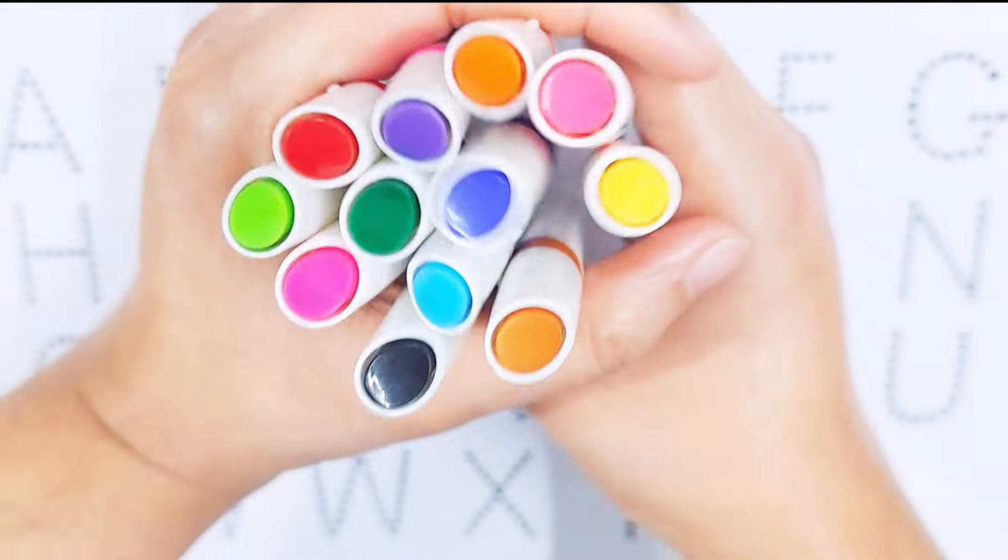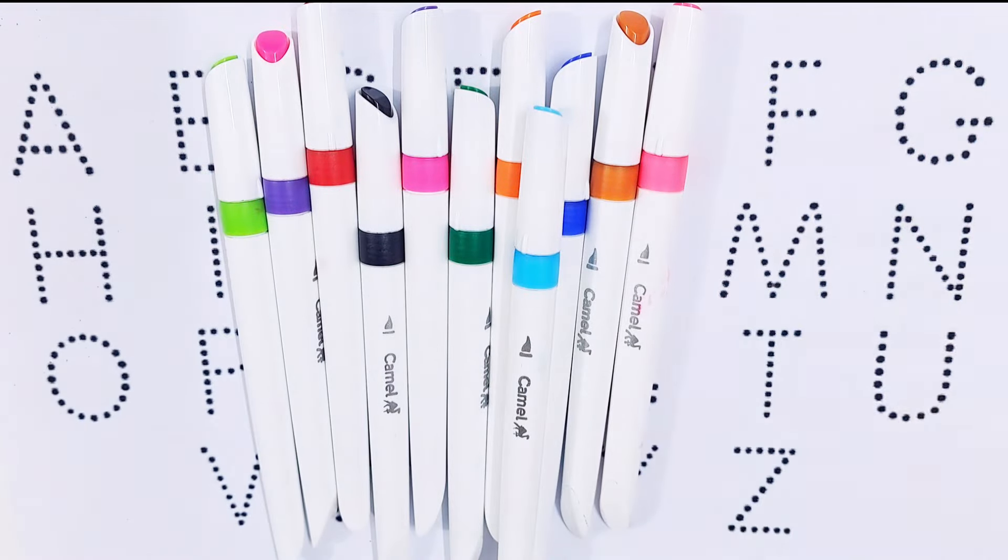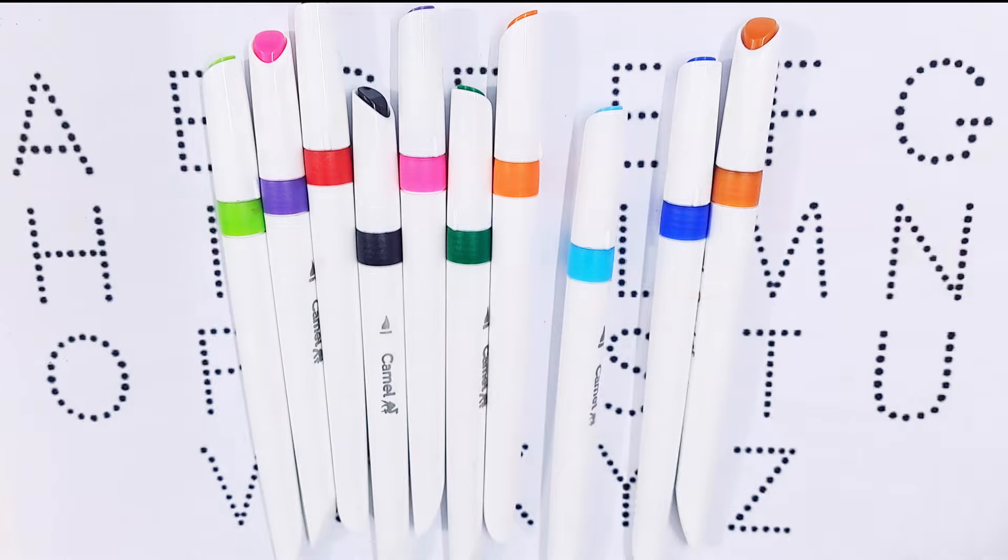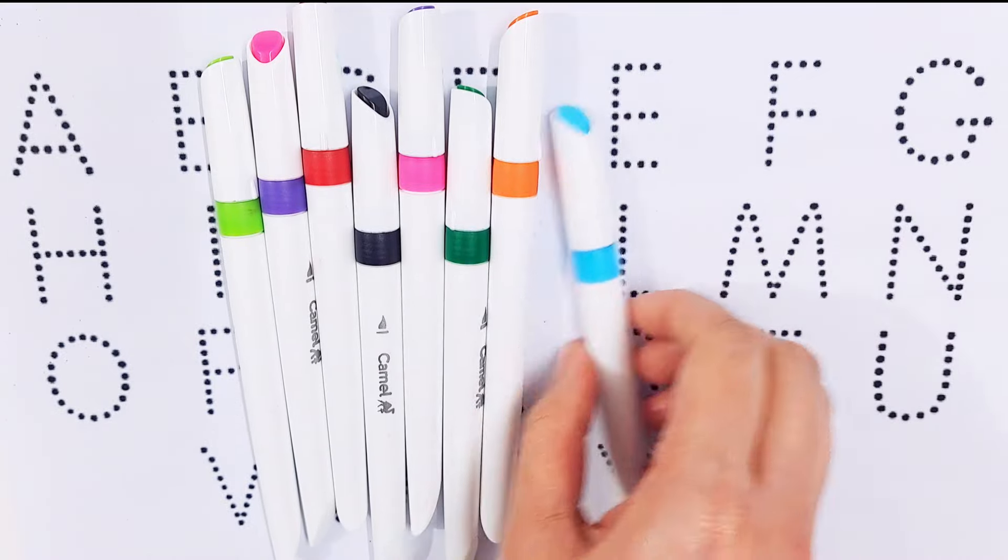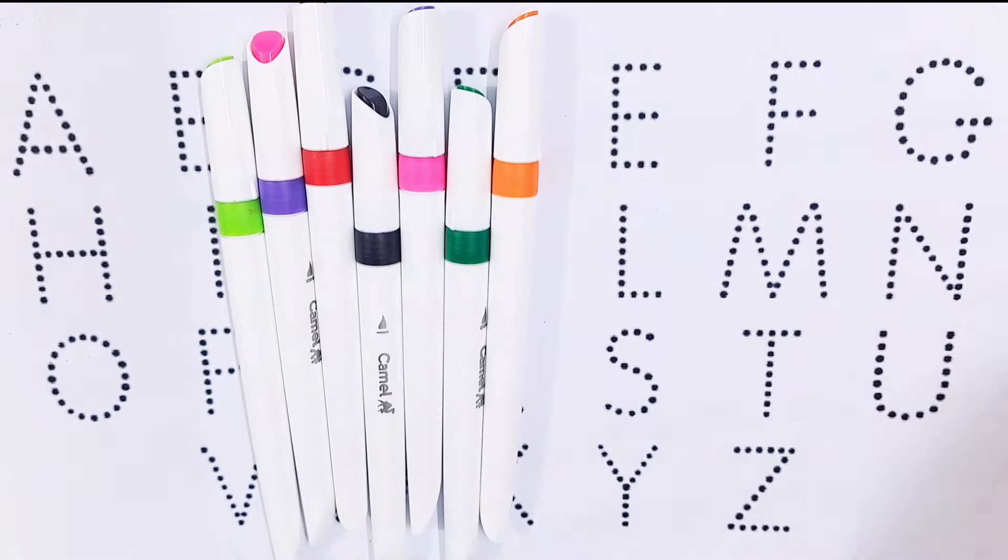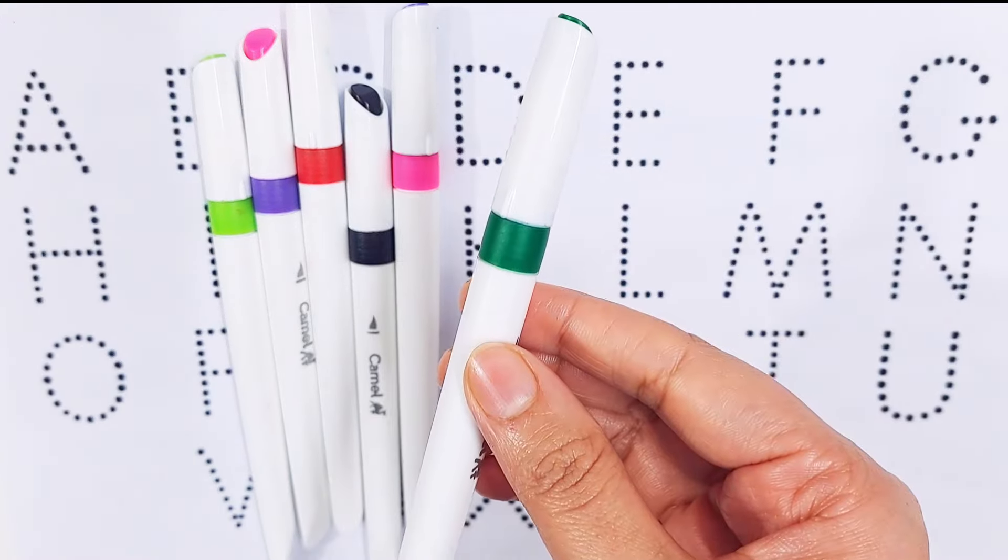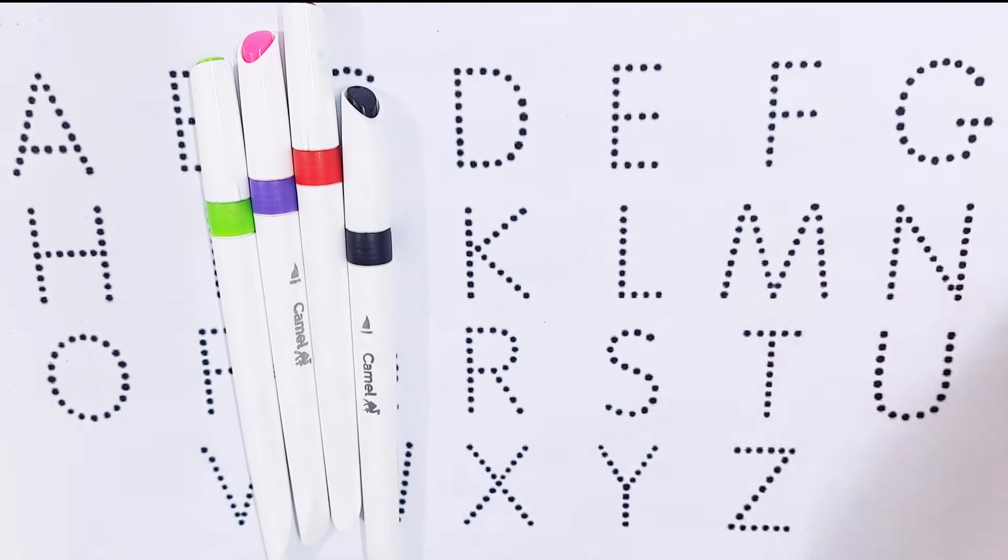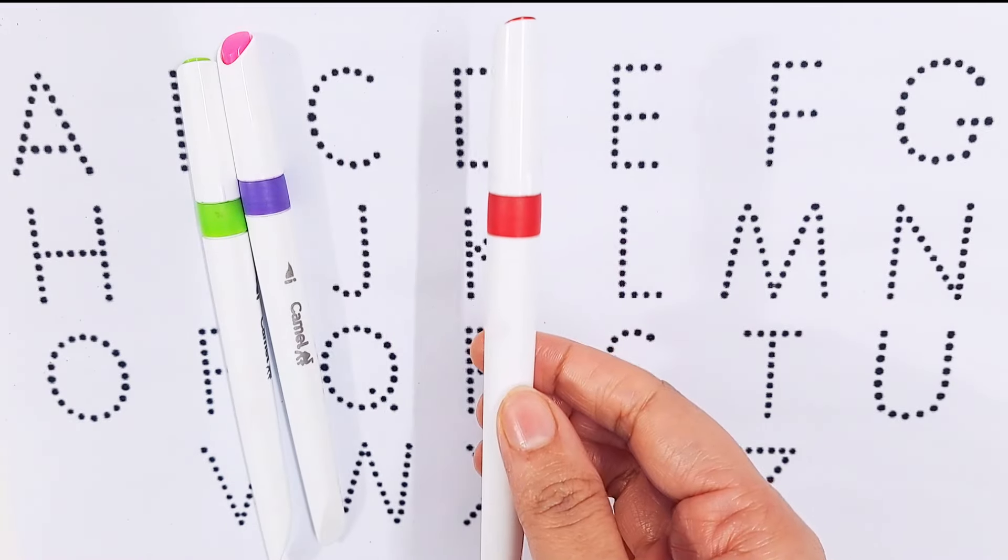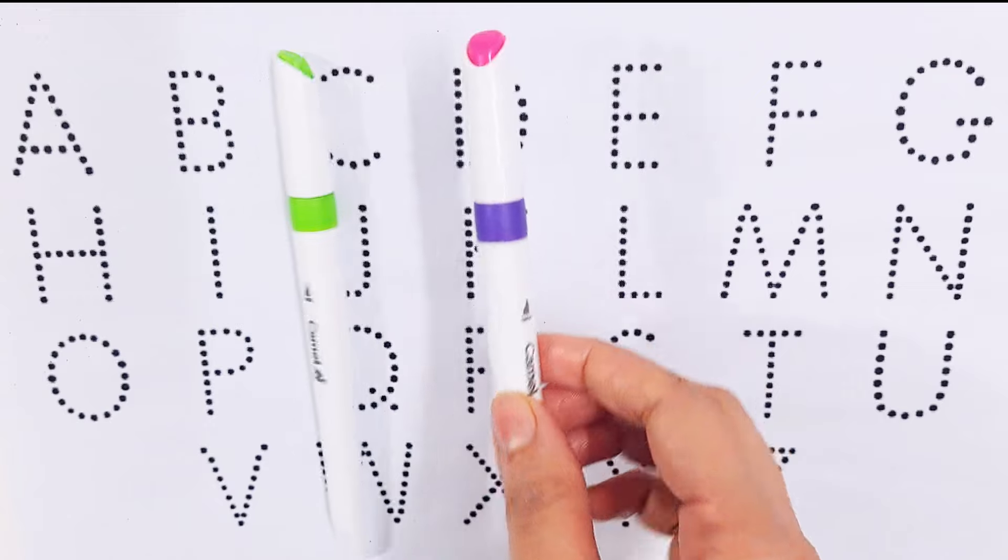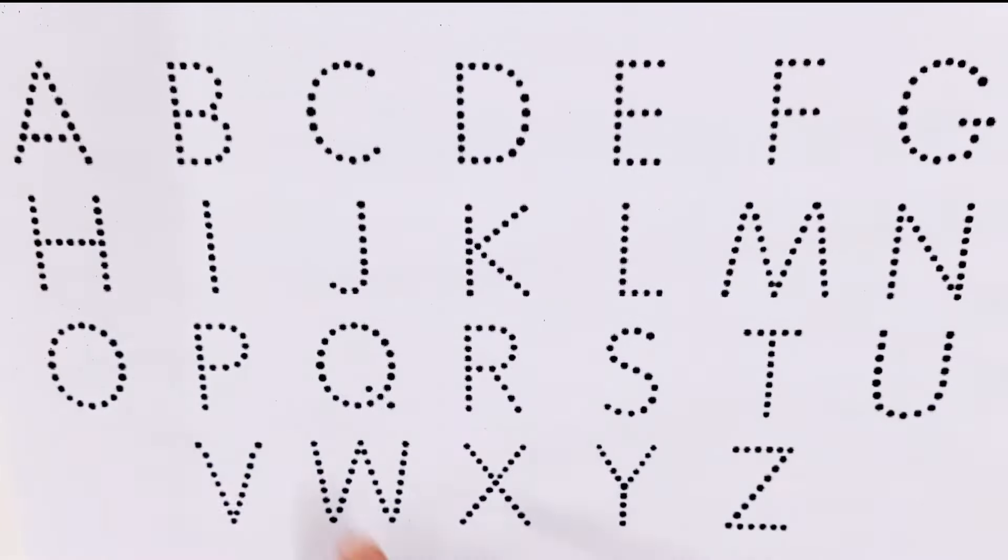Hello guys, let's learn some colors name. Yellow color, pink color, brown color, dark blue color, sky blue color, orange color, dark green color, purple color, black color, red color, violet color, light green color.